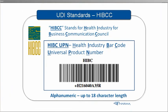HIBCC stands for Health Industry Business Communication Council. The council assigns HIBC UPNs, which stands for Health Industry Barcode Universal Product Number. This is an alphanumeric label that is variable in length, up to 18 characters. So, the HIBC and the HIBCC — are they two different acronyms? Yes, they're two different acronyms. The HIBCC with two C's is the council that provides the barcode, which is the HIBC with one C.